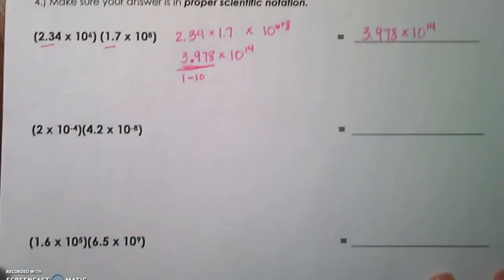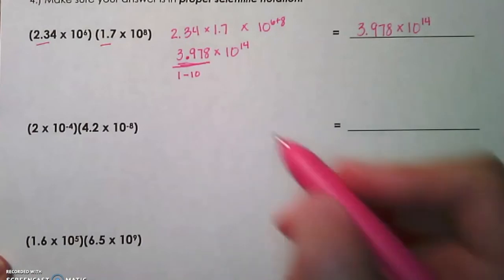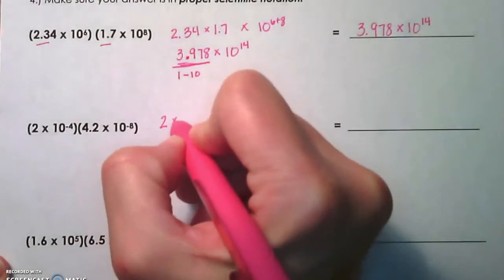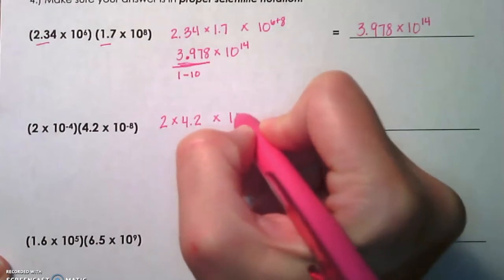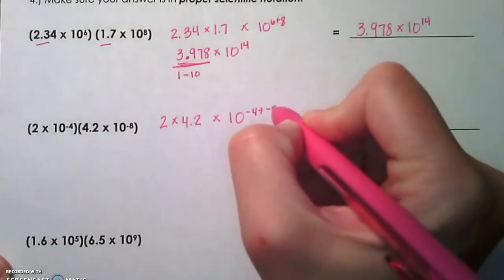Let's look at the next example. We're going to multiply our 2 and our 4.2. Those are our factors. So 2 times 4.2, we're going to keep our 10, and we're going to add our exponents, negative 4 plus negative 8.